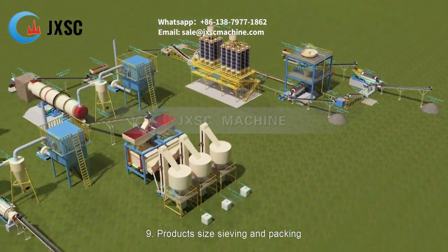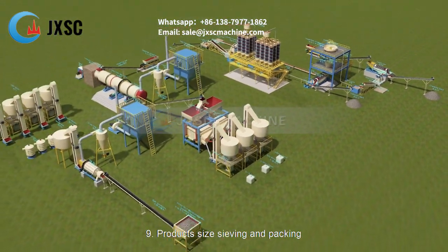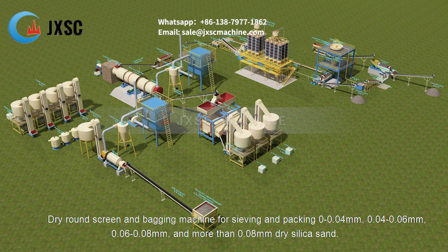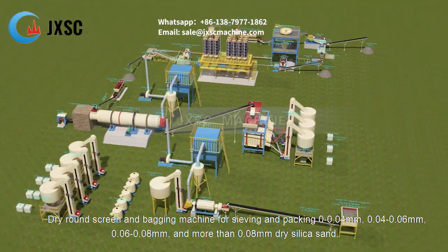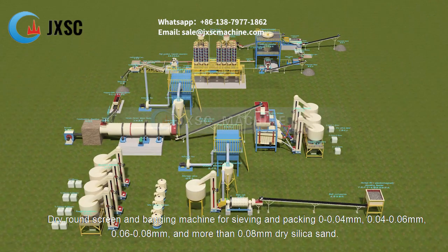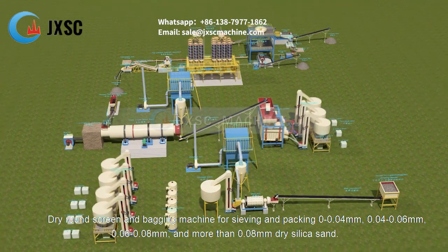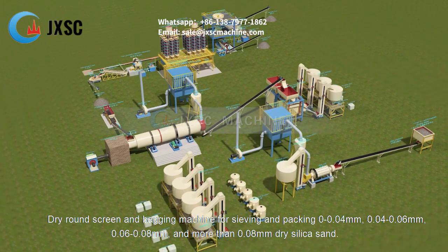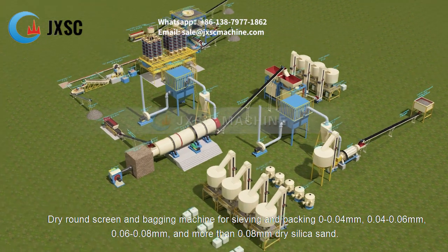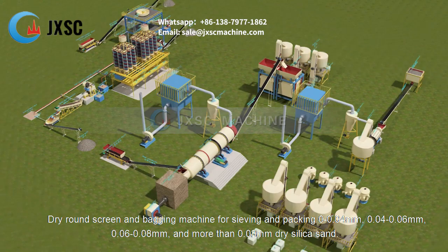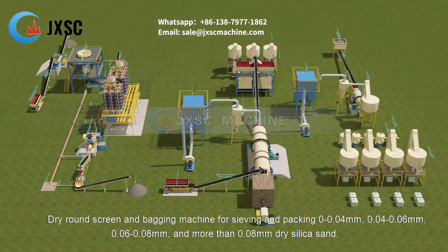9. Product size sieving and packing. Dry round screen and bagging machine for sieving and packing 0 to 0.04 millimeters, 0.04 to 0.06 millimeters, 0.06 to 0.08 millimeters, and more than 0.08 millimeters dry silica sand.